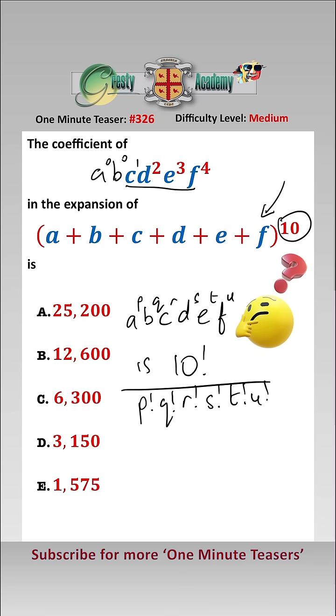f to the 4, and therefore the coefficient of it is 10 factorial over 0 factorial, 0 factorial, 1 factorial, 2 factorial, 3 factorial, 4 factorial,